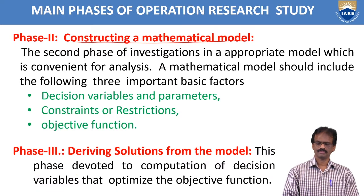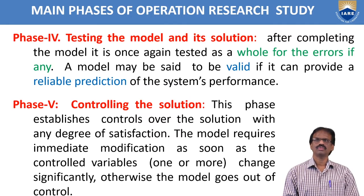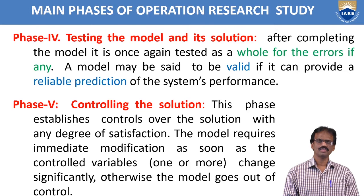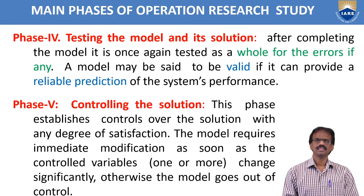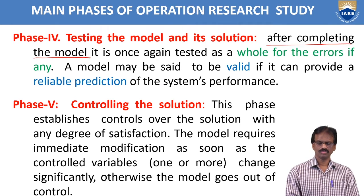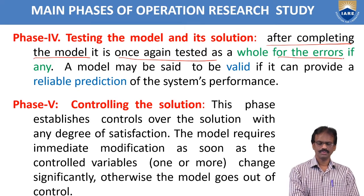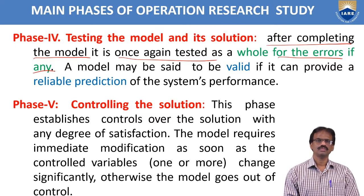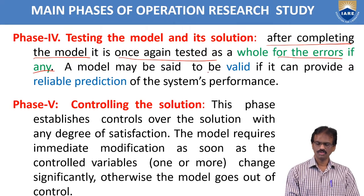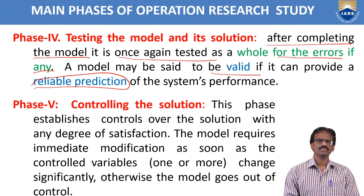Phase number four is testing the model. After finalizing the objective function, we test the model. After completing the model, it is once again tested for errors, if any. A model may be said to be valid if it can provide reliable predictions of the system performance.